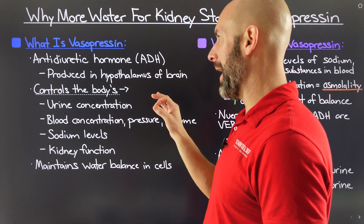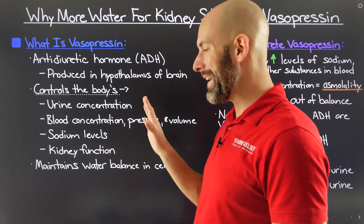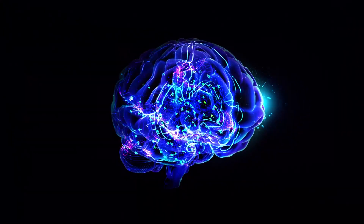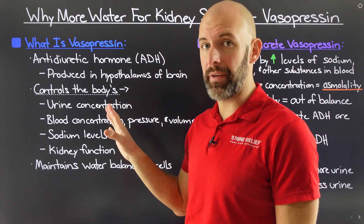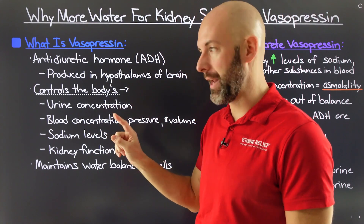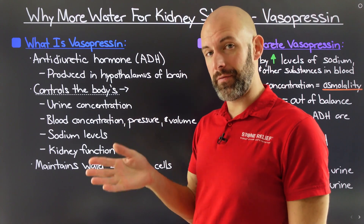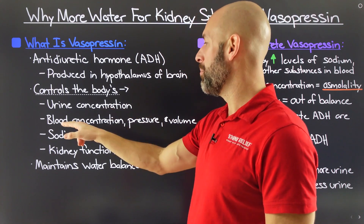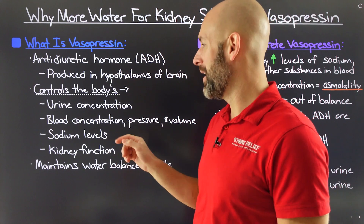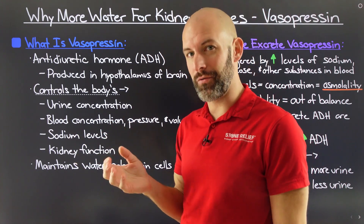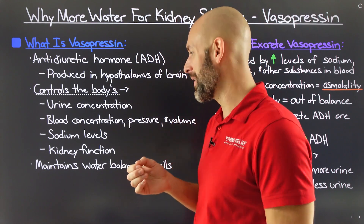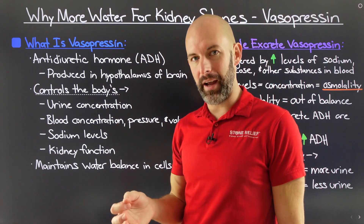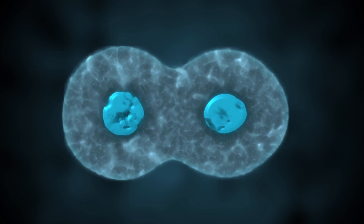Vasopressin is also known as the anti-diuretic hormone or ADH, and this is something that is produced in the hypothalamus of the brain. Vasopressin and ADH is responsible for controlling a number of things throughout your body — most importantly, urine concentration, which as we've seen in our last video on urine osmolality, is directly related to your risk for kidney stones. Also blood concentration, pressure and volume, sodium levels, and kidney function are all very significant when it comes to kidney stones.